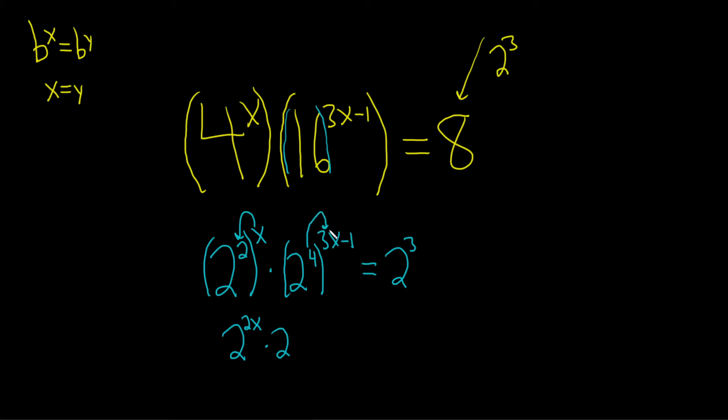So 4 times 3x is 12x. And then 4 times 1 is 1. And here we have 2 cubed.